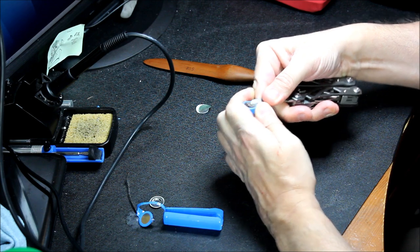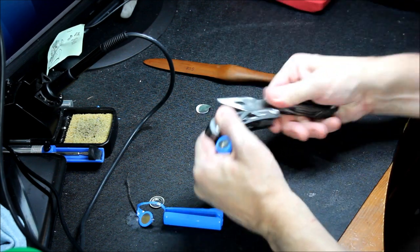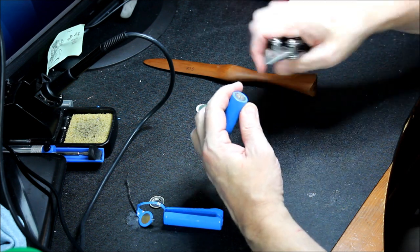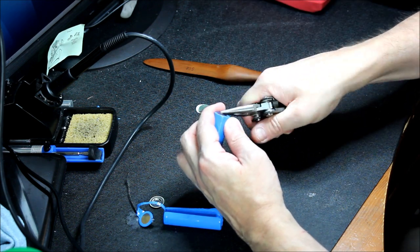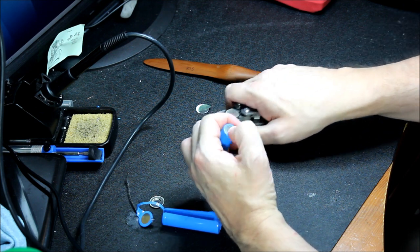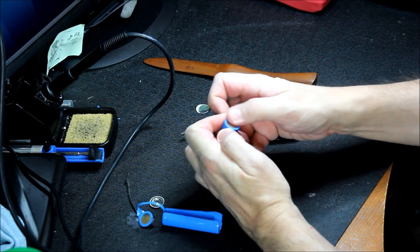So we want this fairly smooth, and a pair of pliers, and just roll that off. So it's nice and smooth.